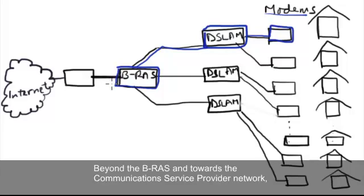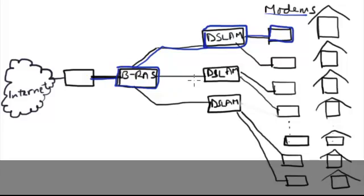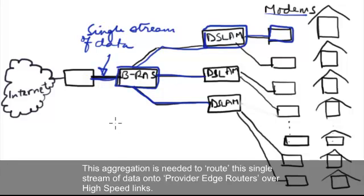Beyond the Brass and towards the communication service provider's network, the data from all subscriber local loops are aggregated onto a single stream of data. This aggregation is needed to route the single stream of data onto provider edge routers over high speed links.